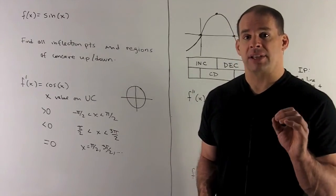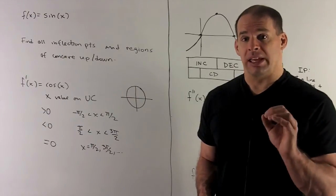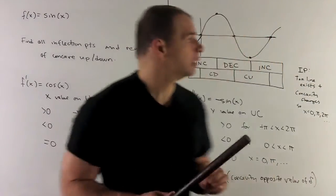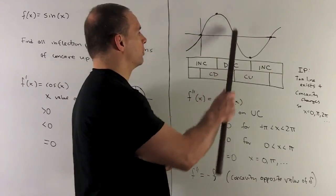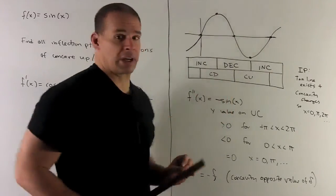So for sine of x, between zero and pi, we're going to be concave down. So as I go from zero to pi, notice the bowl is facing down, so we are concave down.